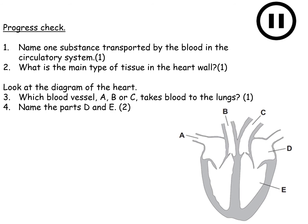Now's your chance for a progress check — these are actual exam questions. Name one substance transported by the blood in the circulatory system. What is the main type of tissue in the heart wall? Looking at the diagram, use a letter to identify which blood vessel takes blood to the lungs. And as a recap of the previous slide, name the parts labelled D and E on that diagram. Press pause and play when you're ready to move on.